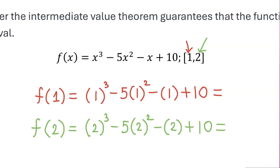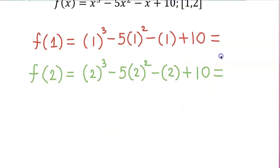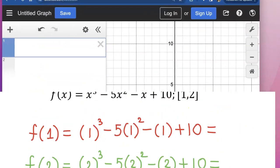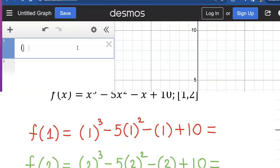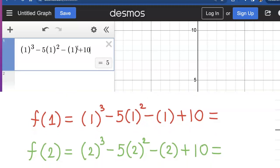Now I'm going to evaluate for their signs. What you want to see is if one comes out to be positive and the other comes out to be negative, then we know that zero's got to be in between them. So I'm going to go plug these into a scientific calculator right here. I'm doing 1 cubed minus 5 times 1 squared minus 1 plus 10. So when I plugged in 1 into the function it came out to be positive 5.